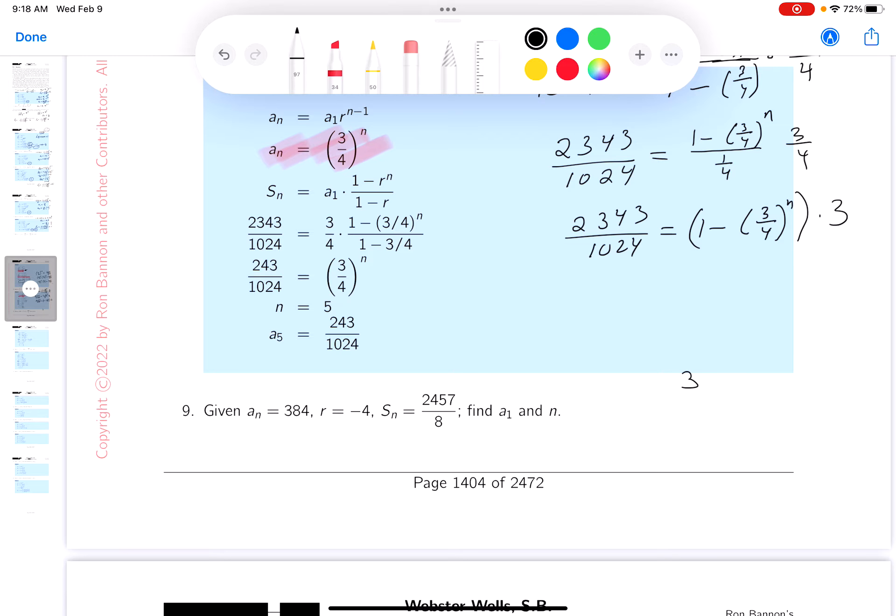And I'll write this down as 1 minus 3 quarters to the n. And then, what I noticed, if I multiply 4 times a quarter on the bottom, it's just 1. So we get 3 over here. Let me keep going. I'm going to divide both sides by 3. And 3 goes into 2343. Let's write this down. Let's see, 7, that would be 21, this would be 24. That would be 8, 24, 3, 1. So it's 781 over 1024 is equal to 1 minus 3 quarters to the nth power.